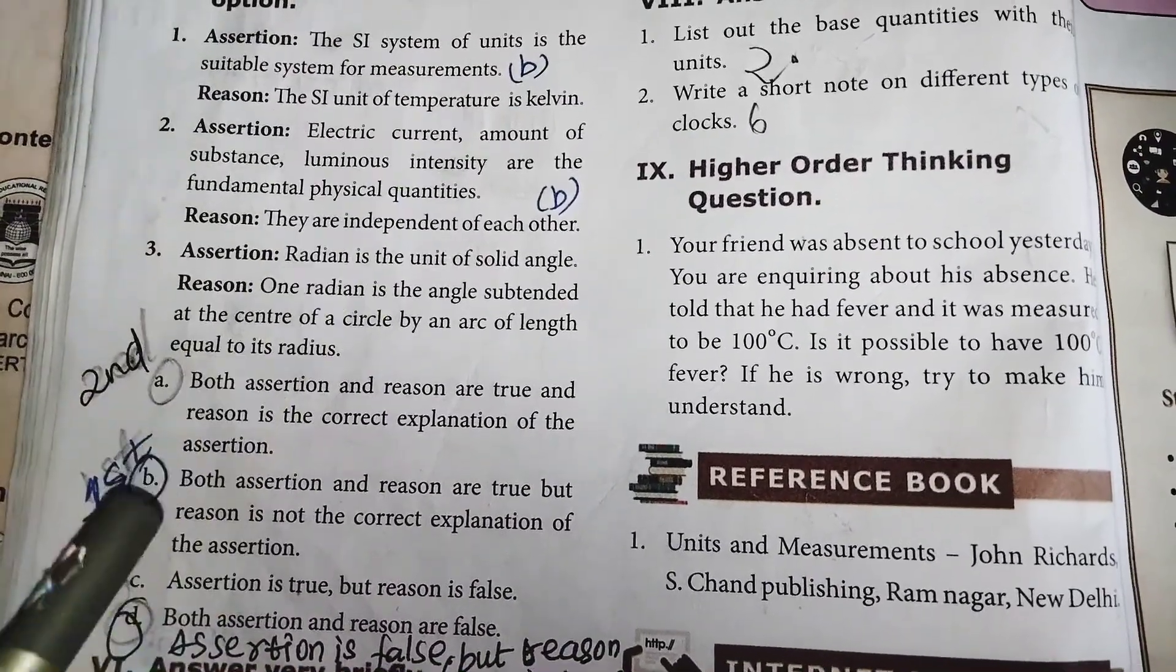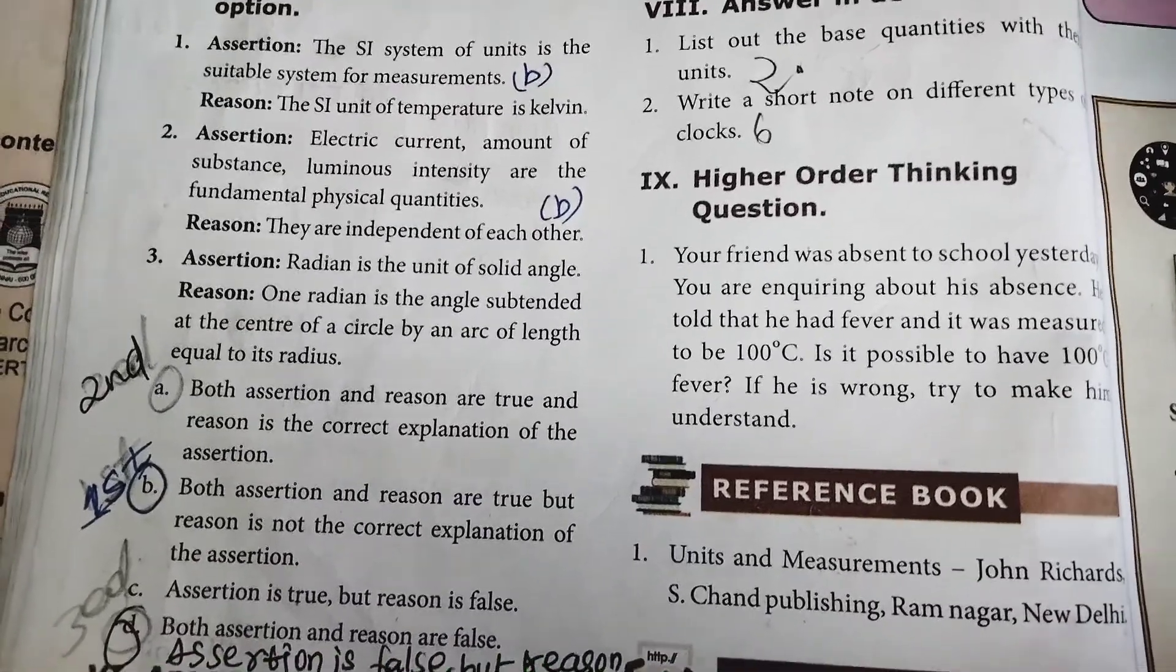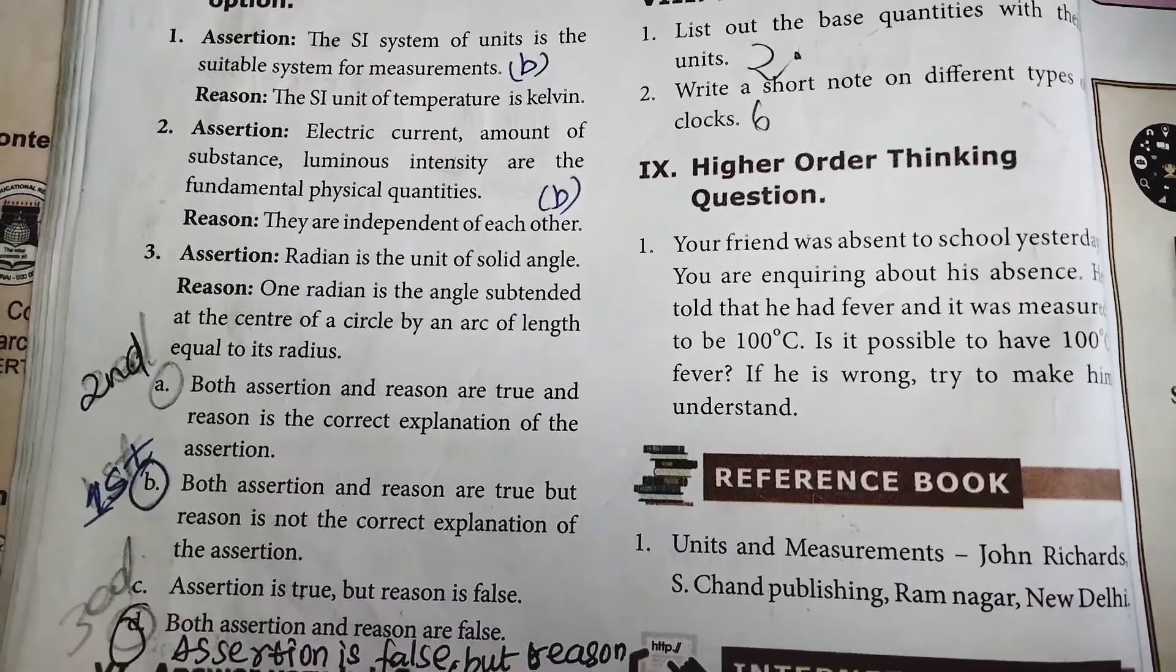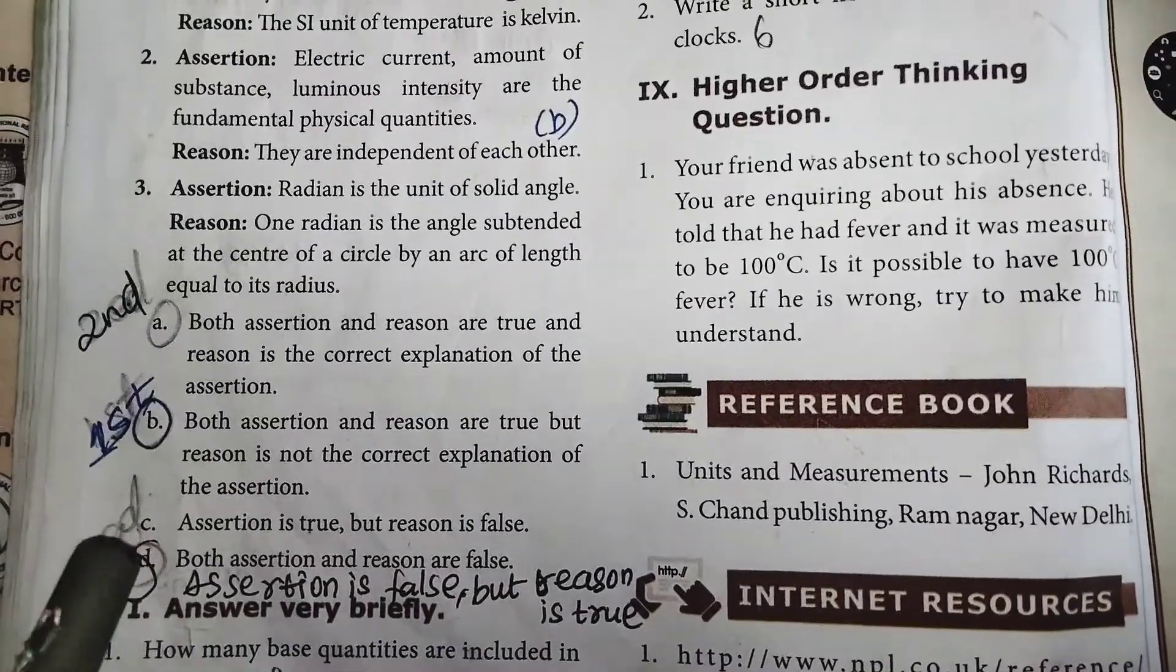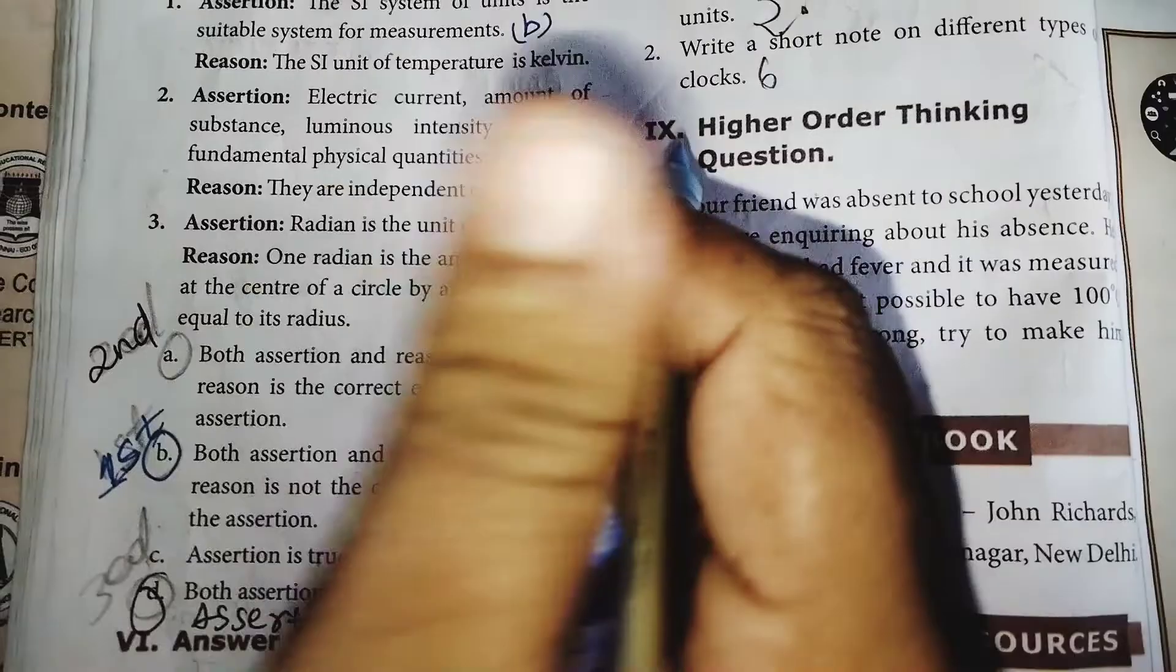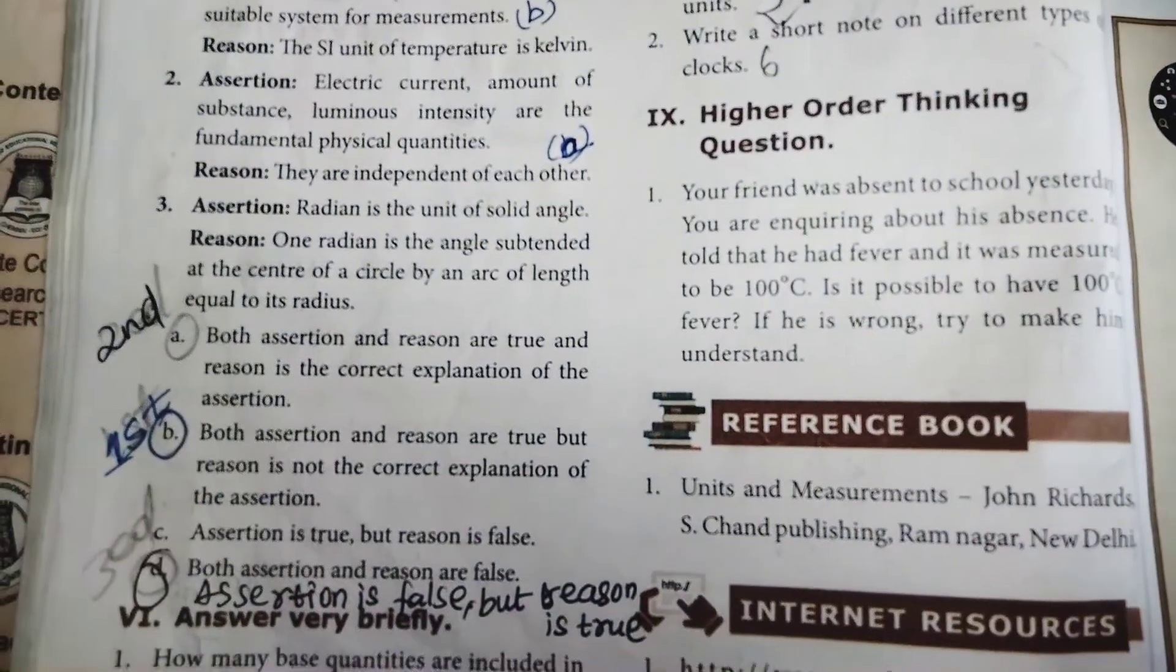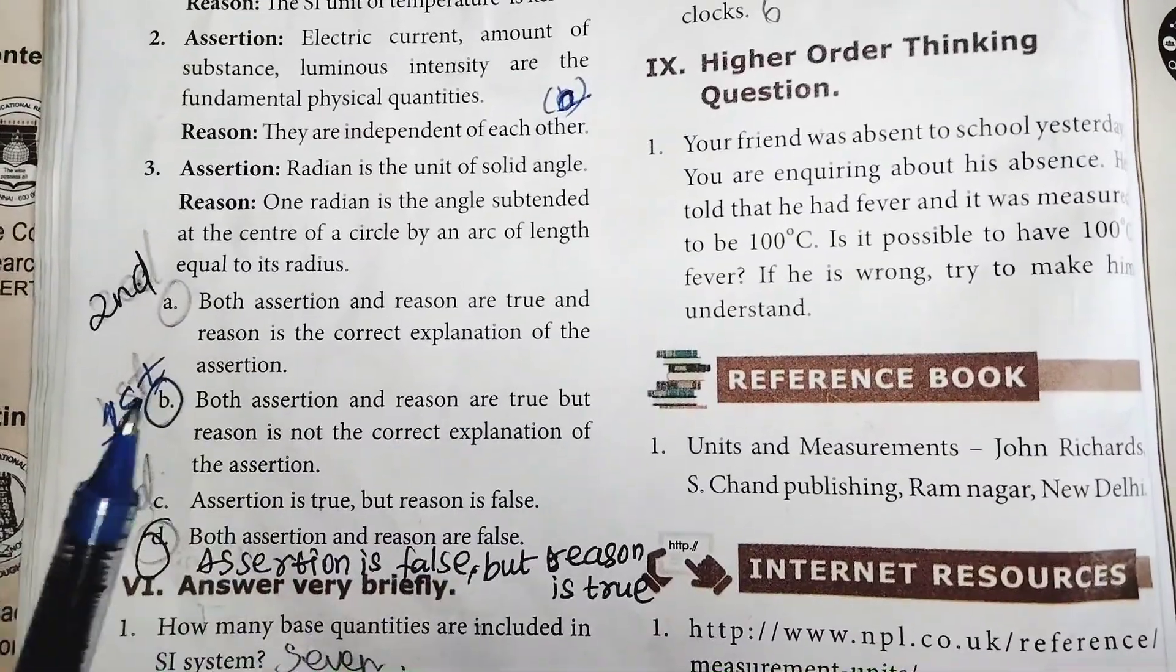First one, answer B. Second one, assertion: Electric current, amount of substance, luminous intensity are the fundamental physical quantities. Reason: they are independent of each other. Second one, answer B. Both assertion and reason are true and reason is the correct explanation of the assertion.